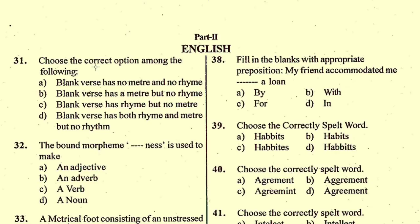Question number 31: Choose the correct option among the following. The correct option is B. Blank verse is poetry written with regular metrical but unrhymed lines, almost always in iambic pentameter. So option B — blank verse has meter but no rhyme — is correct.